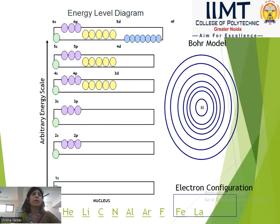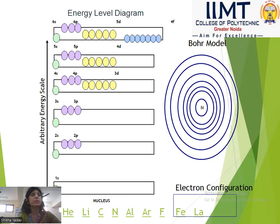The second point of the Bohr-Bury rule states that the outermost energy shell in an atom cannot have more than 8 electrons, even if it has the capacity to take up more electrons according to the first rule.